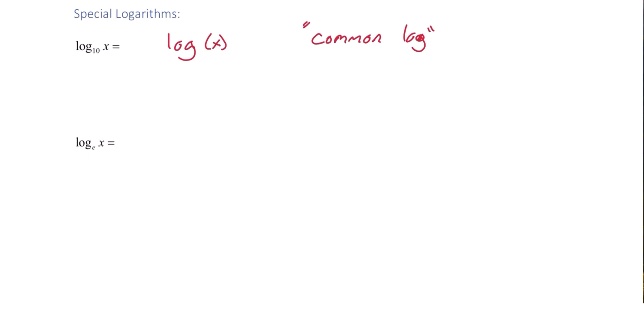The next special log that we'll look at is log base e of x. And similar to log base 10, you'll probably never see a question written log base e of x in the book or in the homework. Most likely, you'll see that written as ln of x. If you ever see ln of x, it's understood to be the log with a base of e. This one is called the natural log.